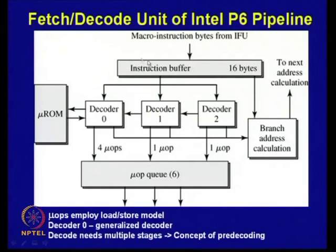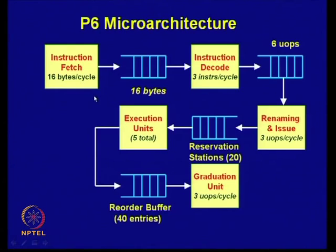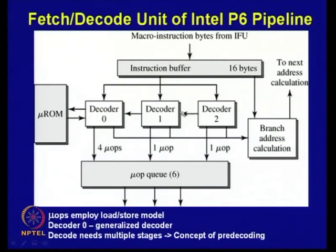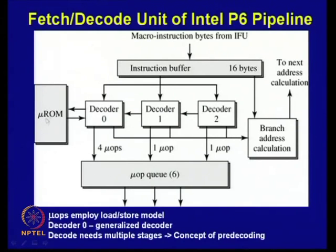This is the schematic diagram of the fetch and decoding unit of the Intel Pentium 6 pipeline. This is the instruction buffer — after fetching, instructions are stored there (16 bytes), which then go to different decoder units. You can see decoder 1 and decoder 2. Six micro-operations are generated, and this is the microprogram control memory stored in ROM.